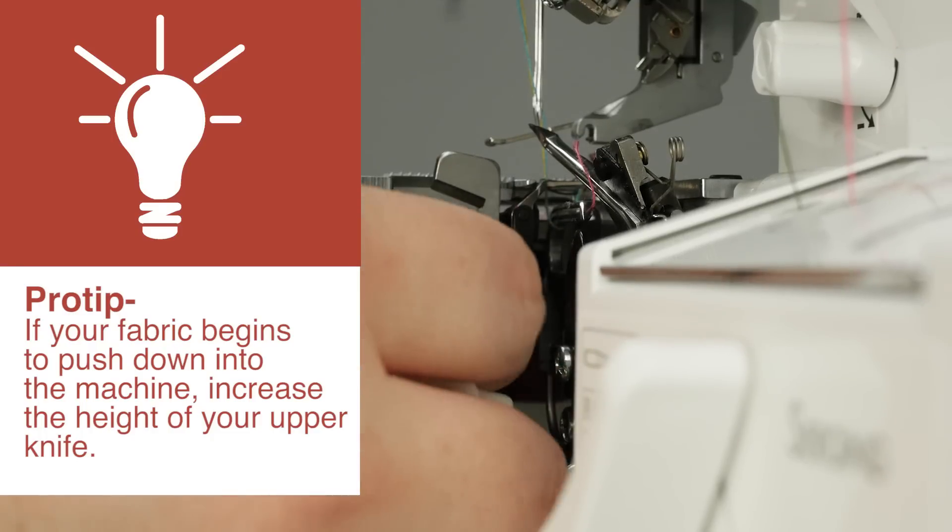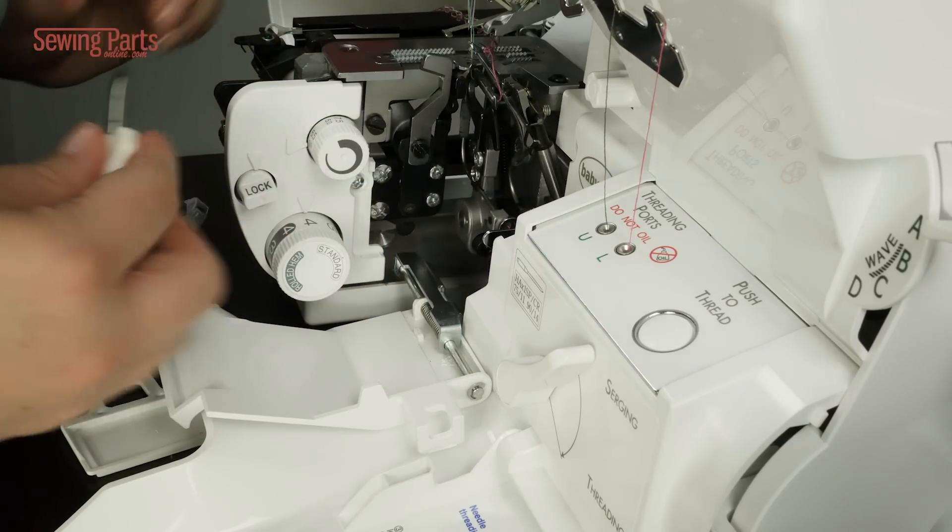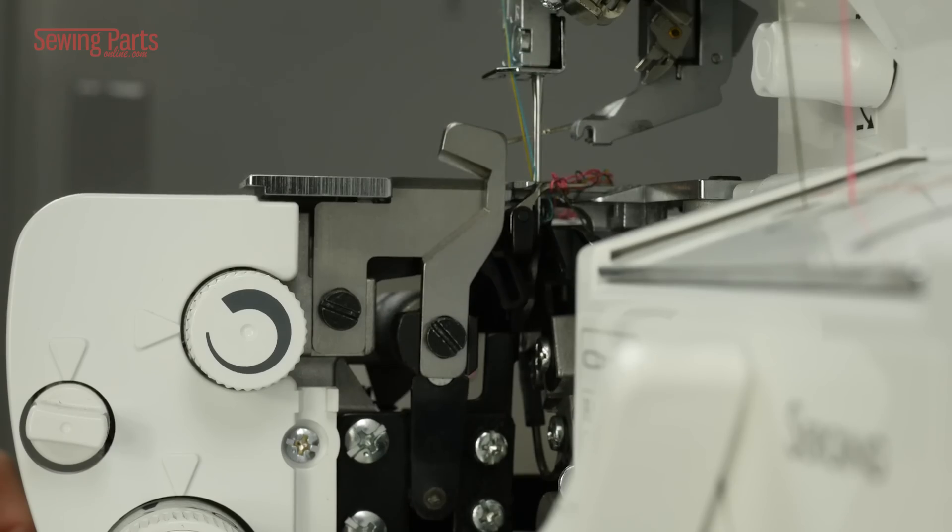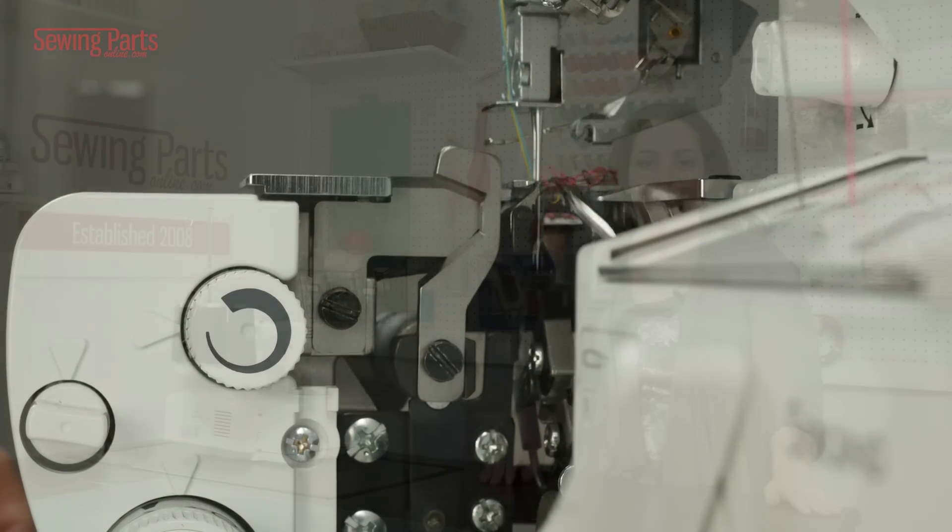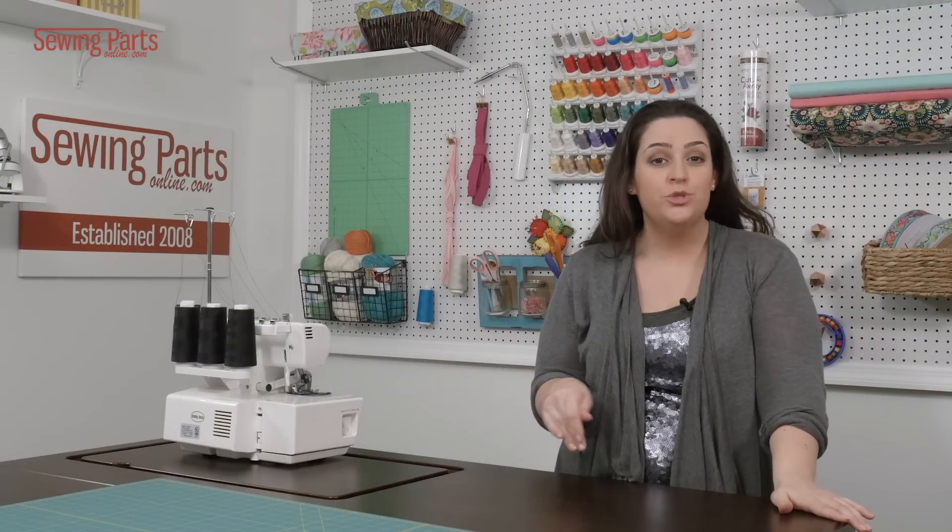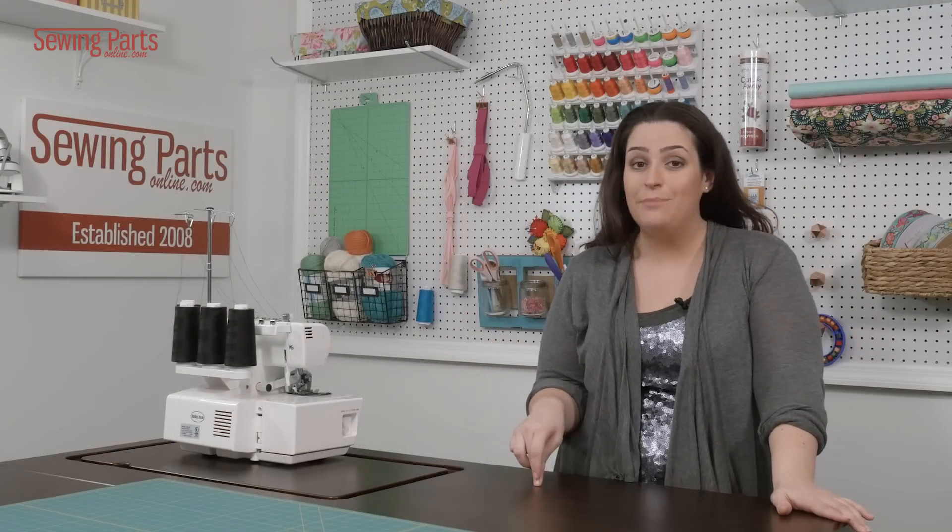And then now we're gonna put on the second one. Now don't strip your screw, but it needs to be in there tightly. Okay. Pretty easy, right? And it's a great way to make sure that your serger is working in tip-top shape.